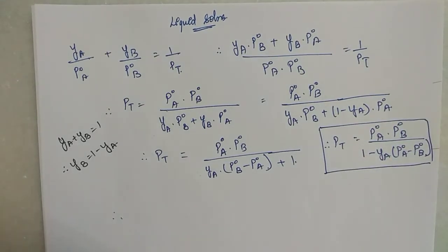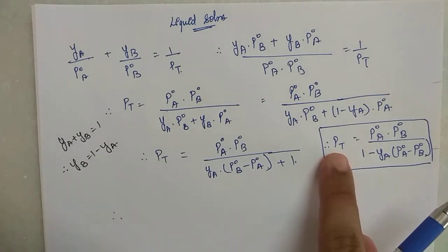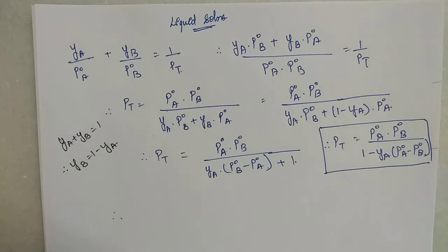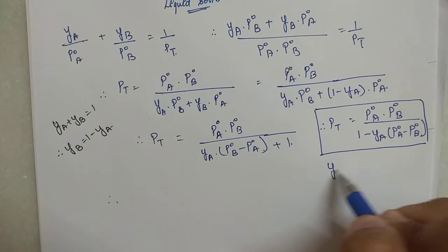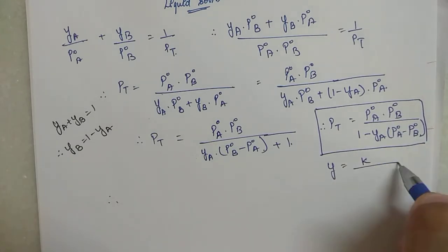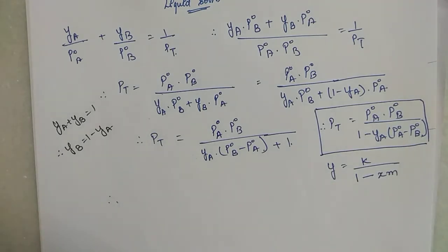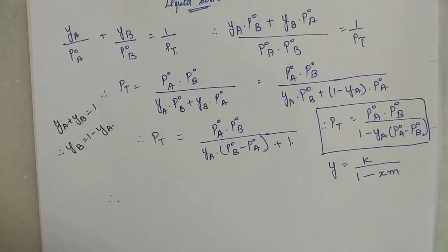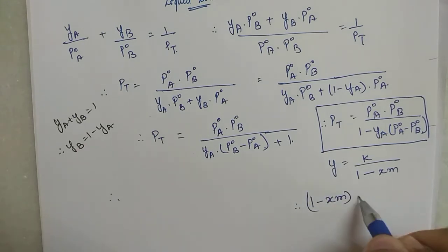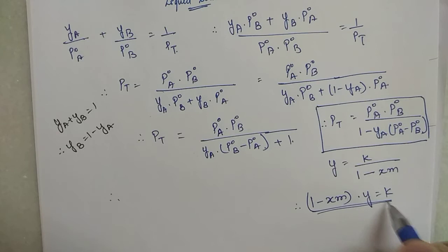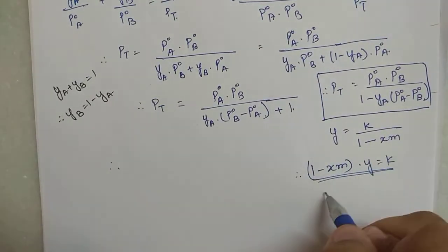Now plotting total pressure versus ya: this equation is of the form y equals some constant k divided by (1 minus x·m). This is not the equation of a straight line. Rearranging: (1 minus x·m) into y equals k, which is the equation of a rectangular hyperbola. So the curve between P_total and ya is a hyperbola.